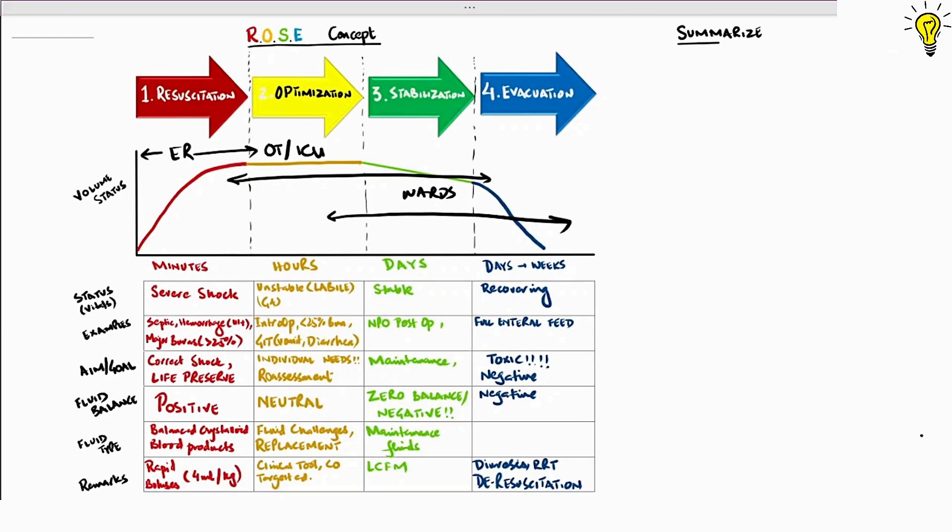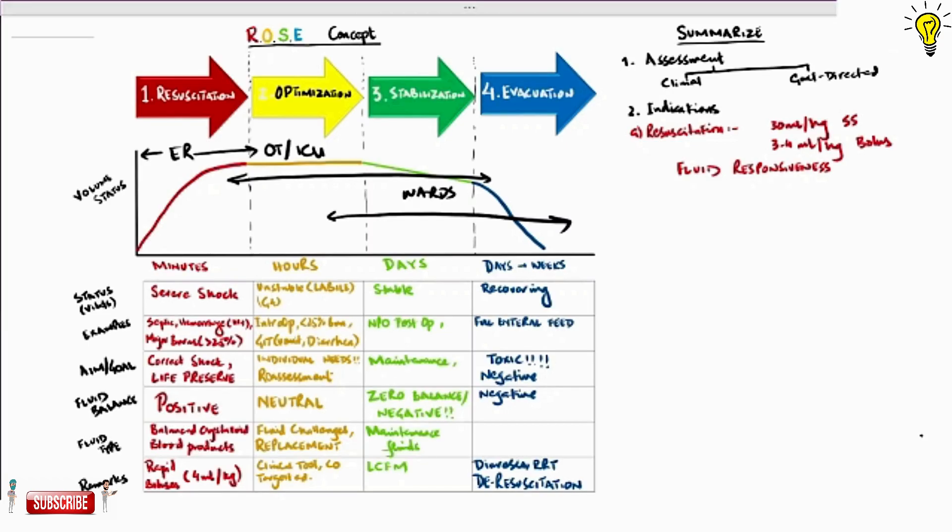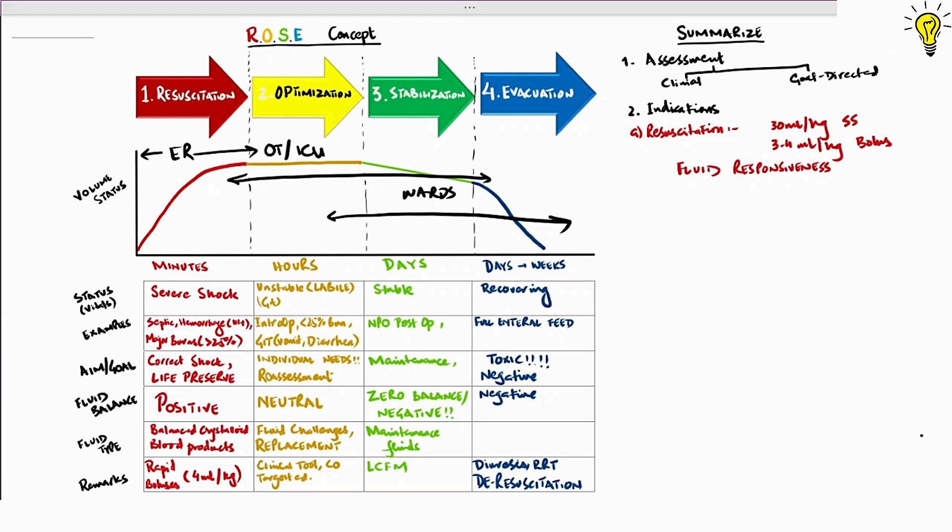To summarize what we have discussed so far: first, assess the patient using clinical tools or goal-directed advanced tools. Next, the indication of fluids. Resuscitation fluid may follow liberal guidelines or better still is latest fluid response to cardiac output goal directed at 3 to 4 ml per kg bolus in repeats.